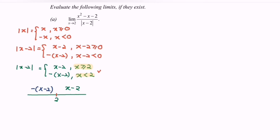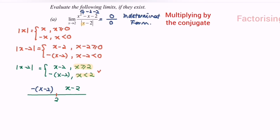Kindly refer to the question. If we substitute x equals 2, we will have 2 squared, which gives 4 minus 2 minus 2. So for the numerator, we will have 0. For the denominator, substituting 2 into x gives 2 minus 2, which also gives 0. So this is what we call the indeterminate form. In this situation, we have the alternative to either multiply the conjugate or factorize. For this case, I'm going to factorize.